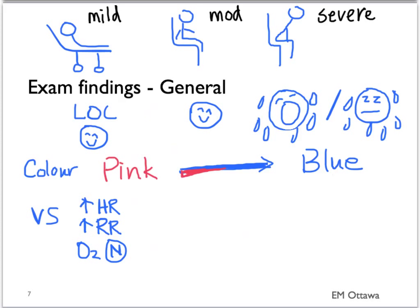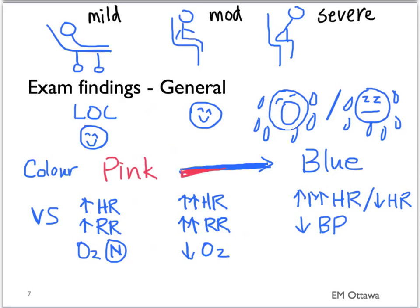In severe patients, they can be either extremely tachycardic or bradycardic. They are hypotensive and their oxygen saturation drops even lower. This is how we try to stratify the patient on general examination.